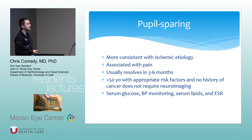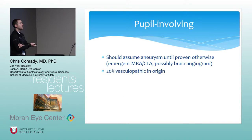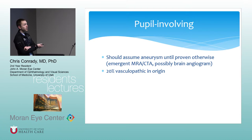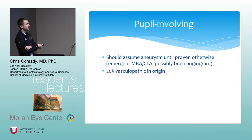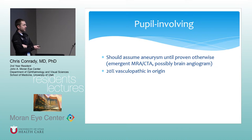If the presentation doesn't fit known risk factors, you should work it up further, keeping in mind that GCA can present similarly. For pupil-involving third nerve palsy, you should basically always assume aneurysm until proven otherwise. The BCSC recommends emergent MRA or CTA; if that doesn't identify an aneurysm, you may proceed to conventional cerebral angiogram as the gold standard. However, imaging is improving and small aneurysms are increasingly detected. Caveat: 20% of pupil-involving third nerve palsies can be vasculopathic in origin, but that is a diagnosis of exclusion.